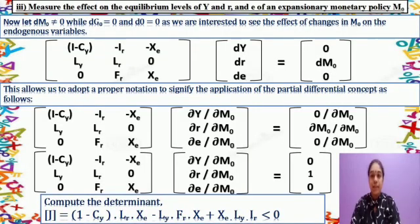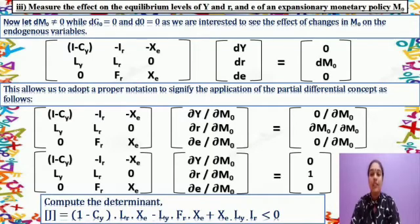My name is Kalavani Nalatambi, metric number 278239. Now I will talk about measuring the effect on the equilibrium levels of Y, R, and E of an expansionary monetary policy M subscript 0. We let dM subscript 0 not equal to 0, while dG subscript 0 equals 0 and d0 equals 0, as we are interested to see the effect of changes in M subscript 0 on the endogenous variables. After the change, the right-hand side vector becomes bracket 0, dM subscript 0, and 0.